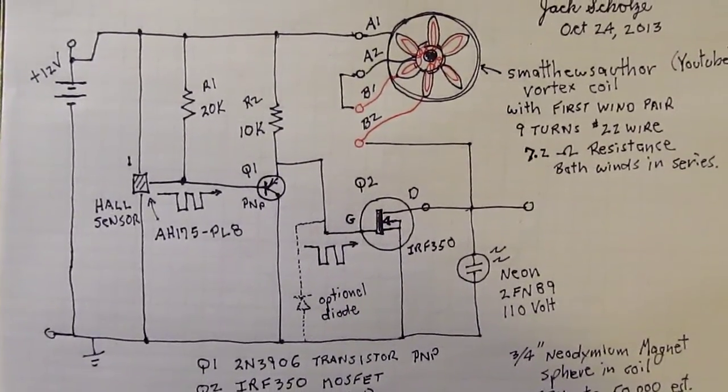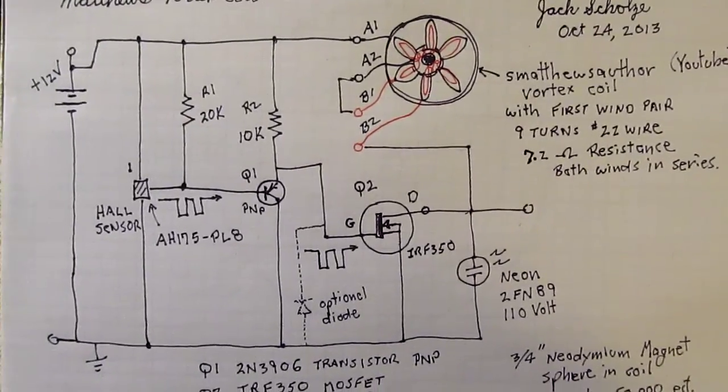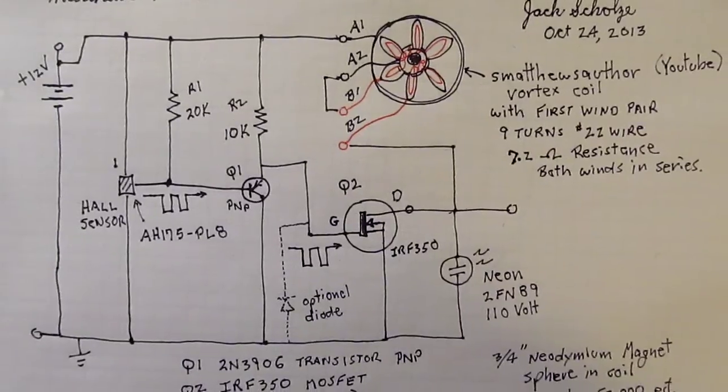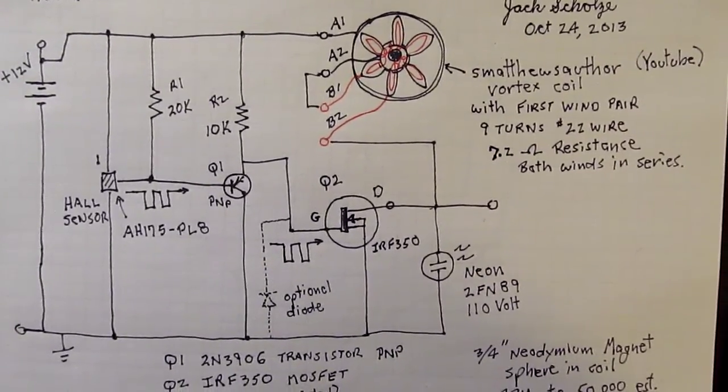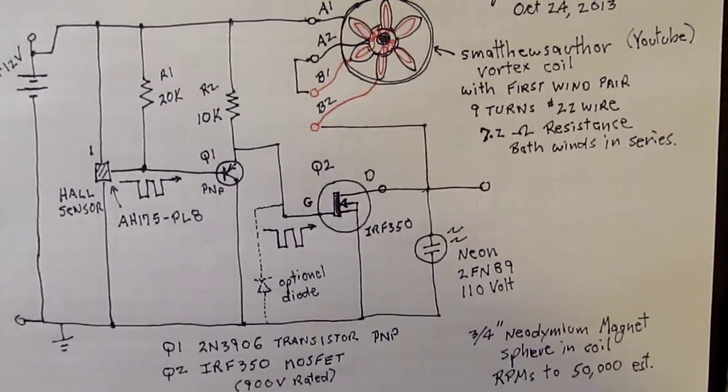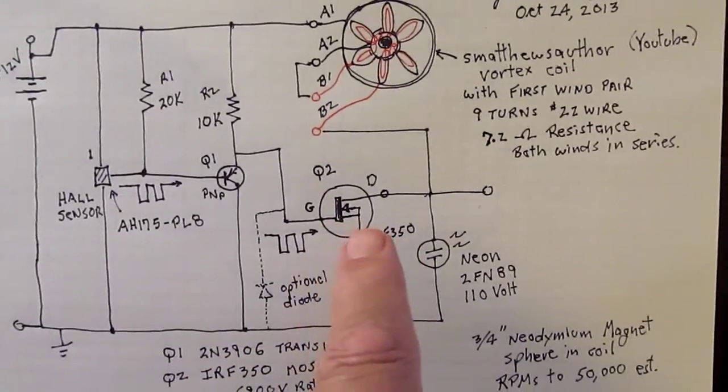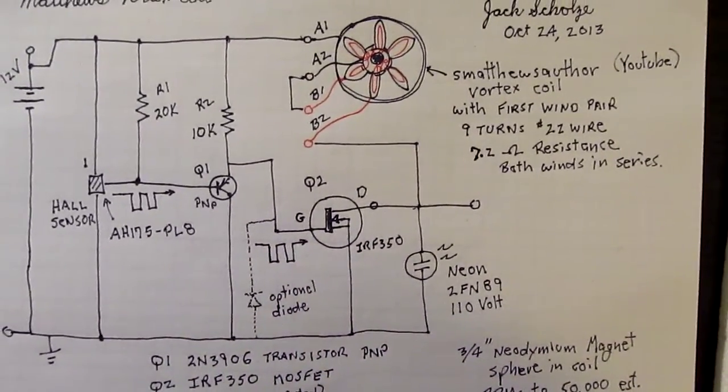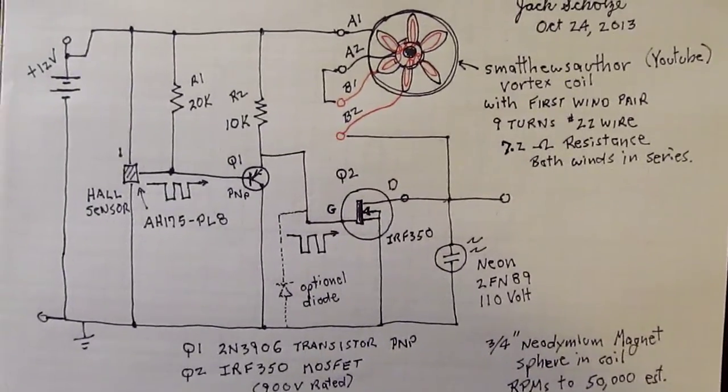It goes to the base of the PNP transistor, which buffers the signal so the negative going pulses go to the base of the MOSFET transistor, which handles up to 900 volt spikes very well.